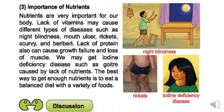Importance of nutrients. Nutrients are very important for our body. Lack of vitamins may cause different types of diseases such as night blindness, mouth ulcer, rickets, scurvy and beriberi. Lack of protein can also cause growth failure and loss of muscle. The best way to get enough nutrients is to eat a balanced diet with a variety of foods.